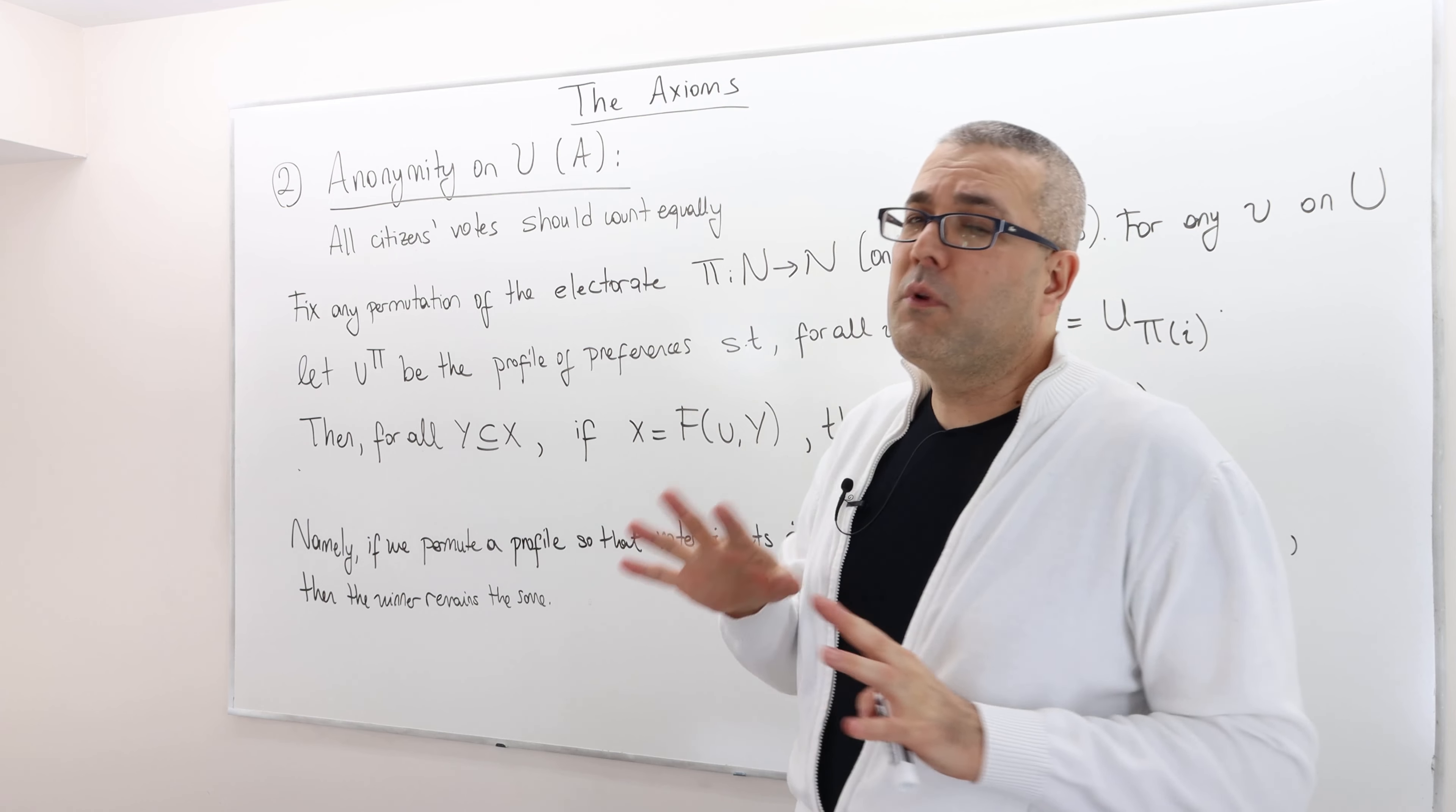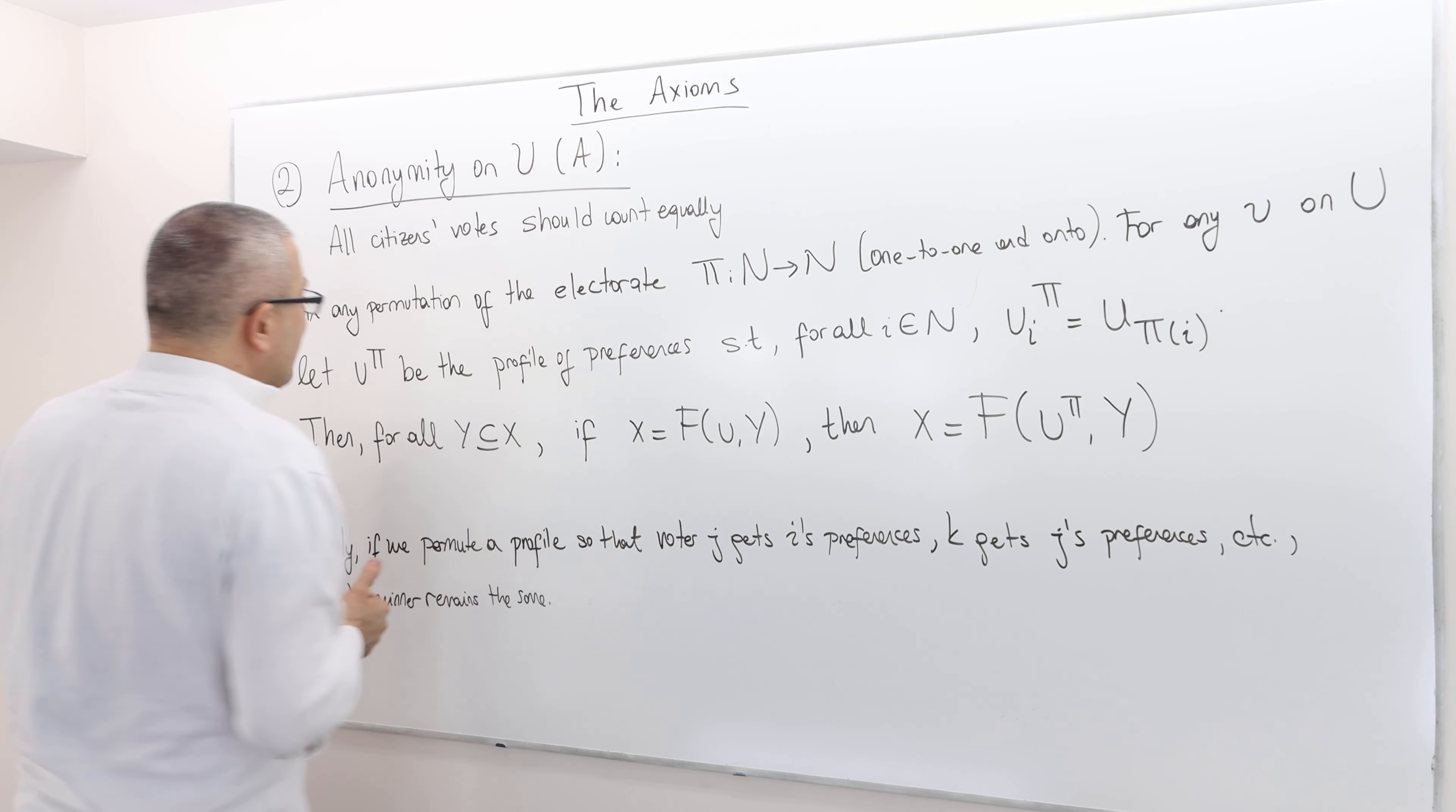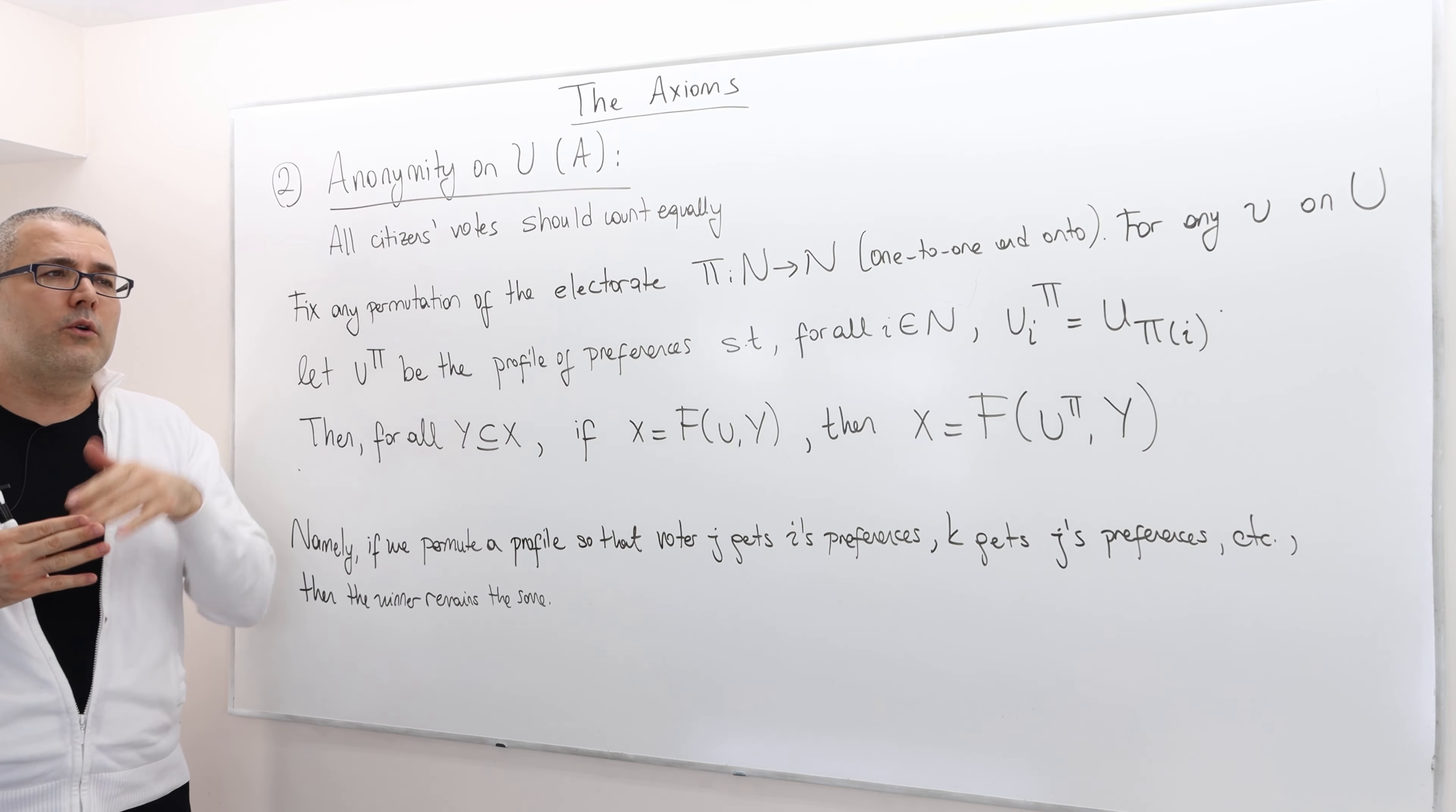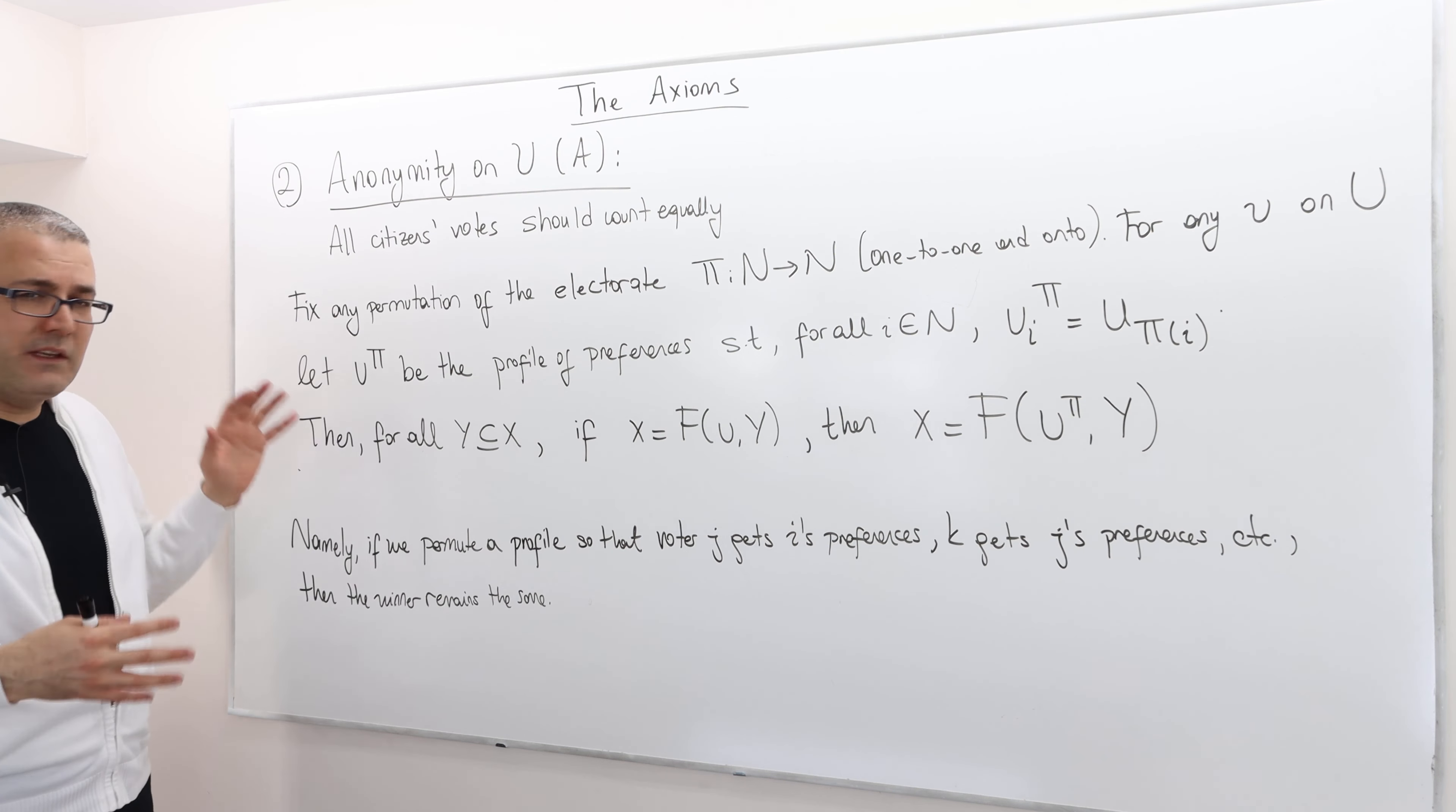Right. So the formal description is rather complicated, or at least it looks complicated. But again, the main idea is very simple. All citizens' votes should count equally, or the voting rule shouldn't favor any individual or any group of individuals. Well, mathematically, how do we describe this? Well, this is how we do it.